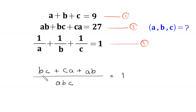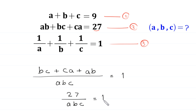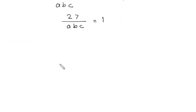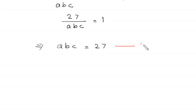Now, we replace bc plus ca plus ab with the value 27. So this will become 27 over abc is equal to 1. If we multiply both sides by abc, this implies that abc is equal to 27. Let us call this equation 4.